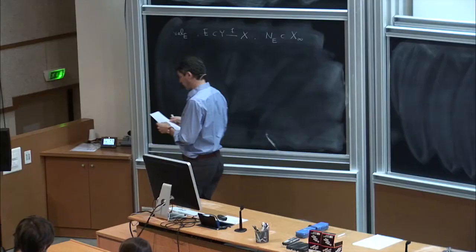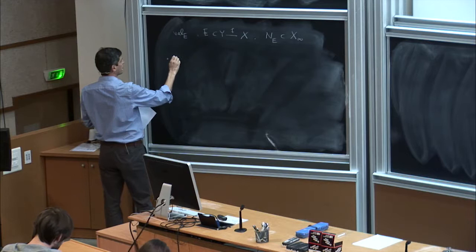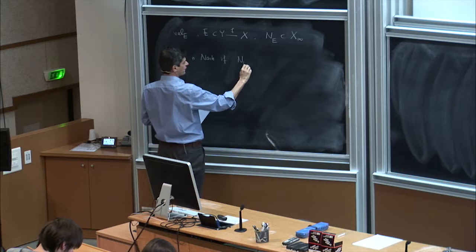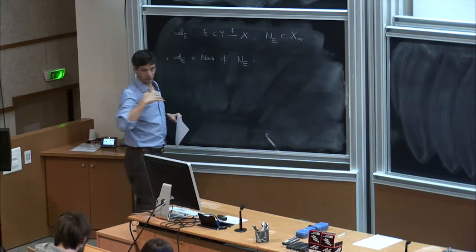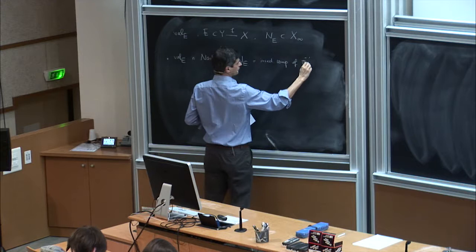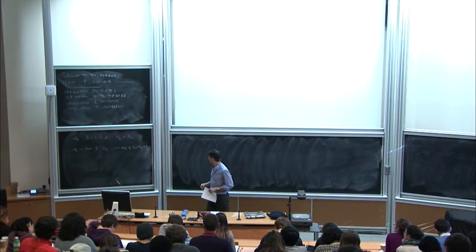We define some properties of these evaluations. We say that the evaluation of E is a Nash valuation if this set of arcs from E on the arc space of X is contained in the locus of the singularities of X, and in fact forms an irreducible component — an irreducible component of the maximum family of arcs of the singularity. This is the definition of a Nash valuation.